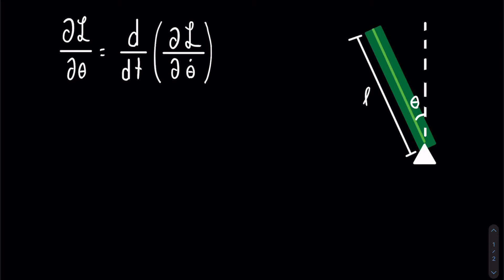Hello, today we will be using Lagrangian mechanics to find the equations of motion for a falling stick attached to a pivot on its end.